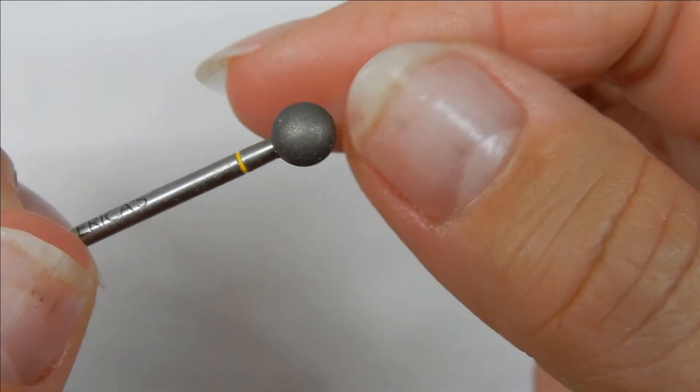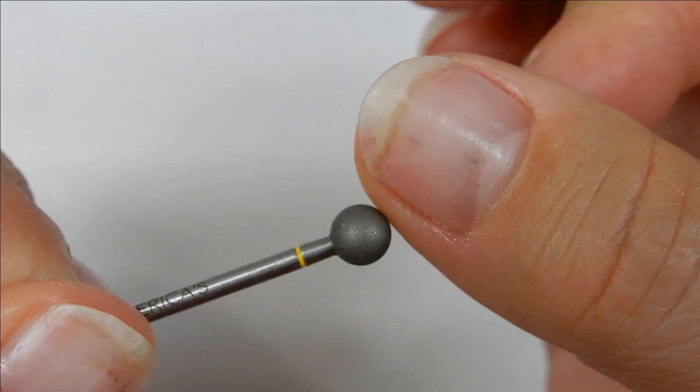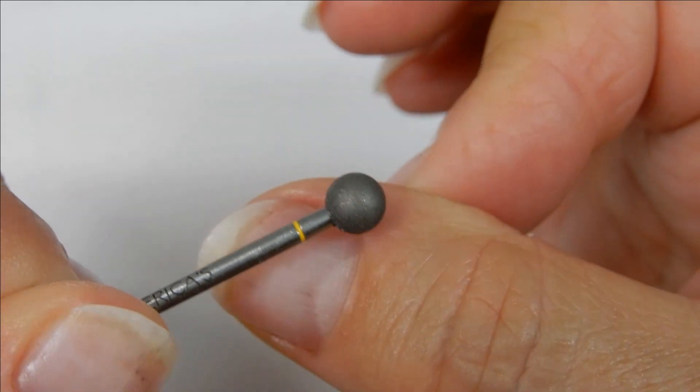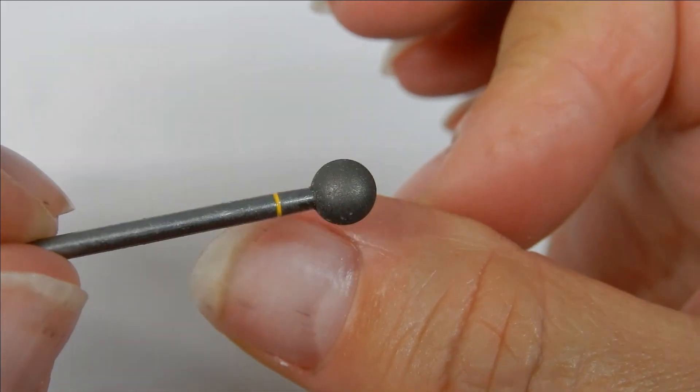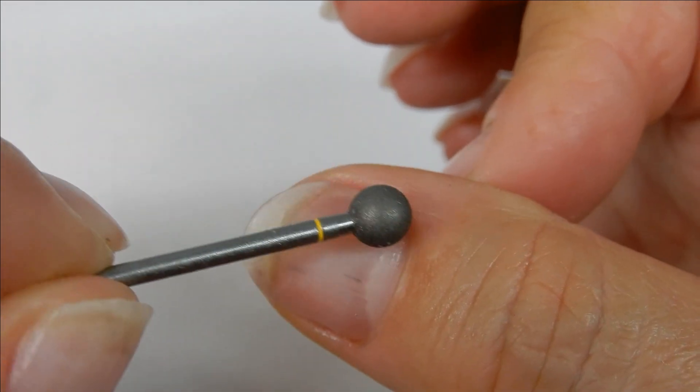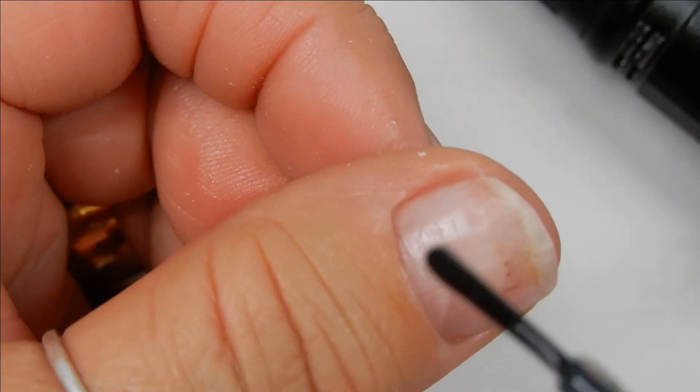And what I do is I apply some oil around the nail and around the skin right here. And then I take this ball bit and I just kind of exfoliate right around that skin. You want to do this with cuticle oil, okay.